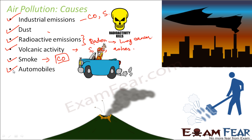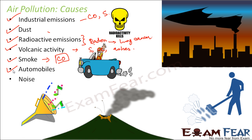Another important source of air pollution is automobiles. Vehicles running on the road produce a lot of smoke containing poisonous gases. Not only smoke, but vehicles also create noise pollution through excessive honking, which can cause psychological as well as physiological damage to human beings. Automobiles are therefore a very important source of both air pollution and noise pollution.